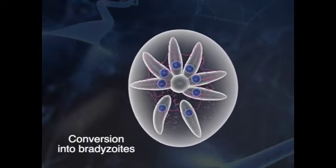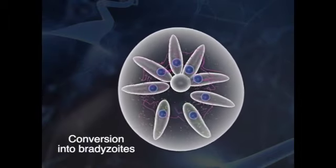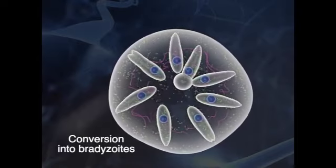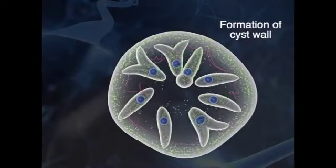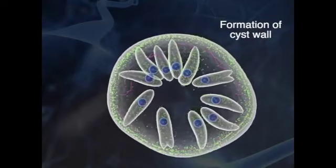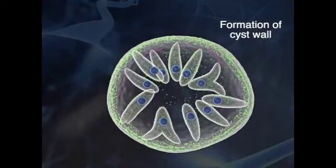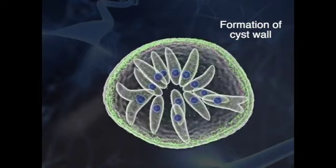The vacuole acquires a thick cyst wall, and is now called a tissue cyst. These tissue cysts can remain unperceived for a long period of time, possibly the life of the host, being characteristic of the chronic stage of toxoplasmosis.